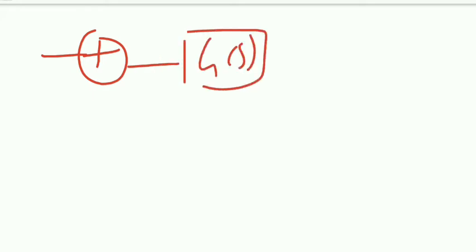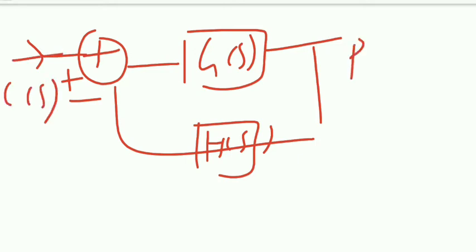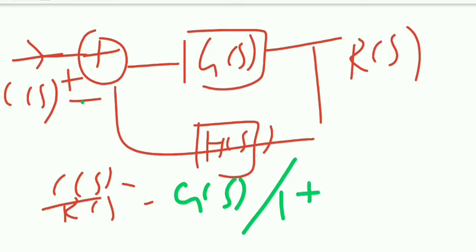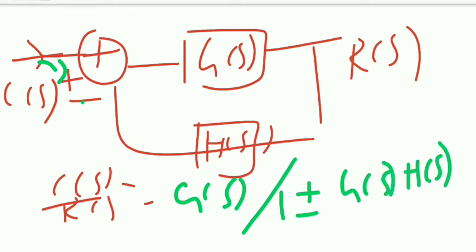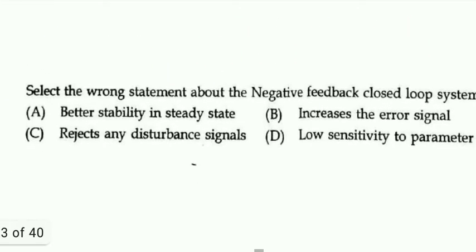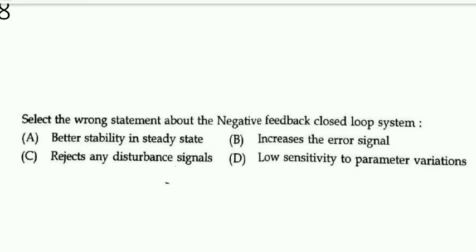To clarify: for a standard block diagram with G(s) forward and H(s) feedback, C(s)/R(s) = G(s)/(1 ± G(s)H(s)). If it is negative feedback use (1 + GH); if positive feedback use (1 − GH). In our problem, b replaces G(s) and d replaces H(s), giving b/(1−bd).